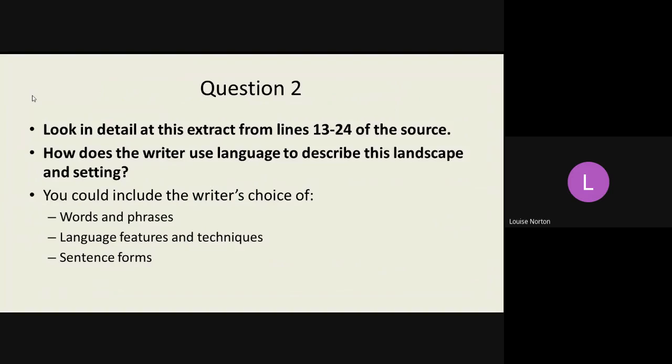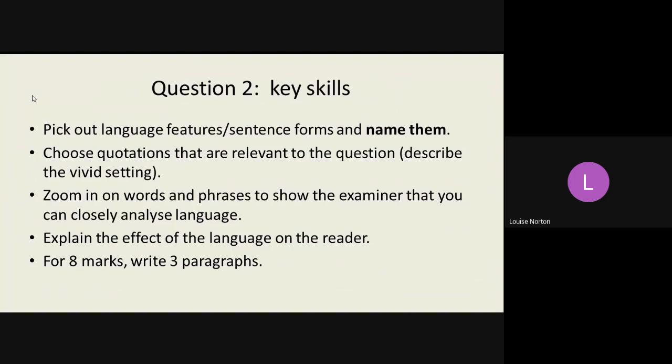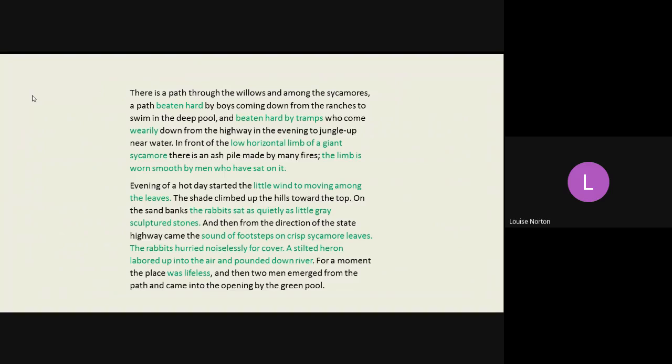So let's have a look at the extract. The key skills you need for this question have been able to pick out language features and sentence forms and name them. You should choose quotes that are relevant to the question. You should zoom in on words and phrases to show the examiner that you can closely analyse language. You can explain the effect of the language on the reader. And then for the full 8 marks, you should write around three paragraphs.